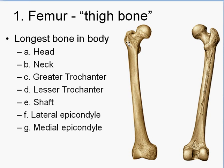The greater trochanter is the part up here that kind of sticks out underneath the neck — this would be the right femur, so this is going to be the outside. The lesser trochanter is on the inside. The shaft of the bone is right here, and then two other parts: lateral and medial epicondyles, which are the parts that kind of bump out at the bottom. Lateral meaning the outside, and medial on the inside.